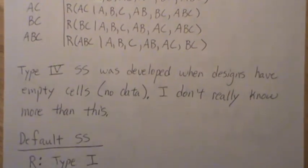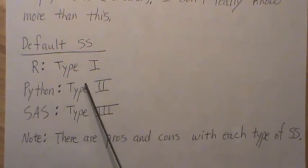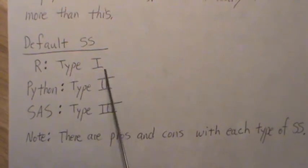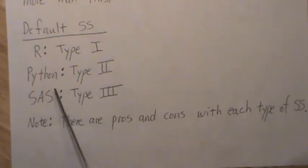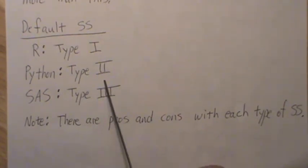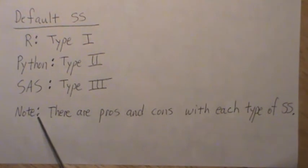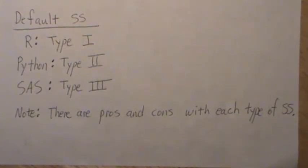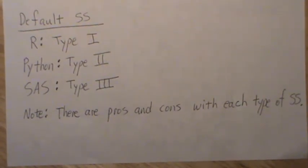The default sums of squares for R is type 1, and lots of people find that frustrating. Python — I think the default is type 2, though someone may need to confirm that. The default for SAS is type 3. There are pros and cons with each of these types of sums of squares, and as we proceed through this playlist, we'll go into more detail. But that's all I have for this video. Hopefully you enjoyed it. Please like the video and subscribe so you don't miss the next one.